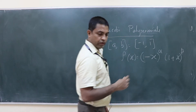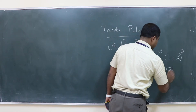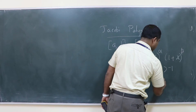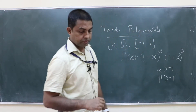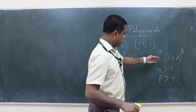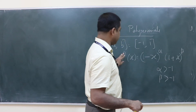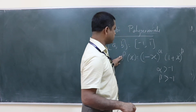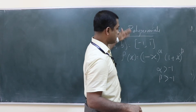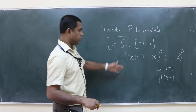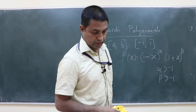Here α should be greater than minus 1 and β greater than minus 1. For a given α and β you get a specific ρ(x), and that ρ(x) will give you a set of orthogonal polynomials which will form a basis.